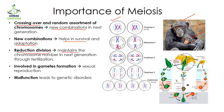Meiosis is a reduction division, and because of this it maintains the chromosome number in the next generation. The chromosome number is restored through fertilization. Here you can see that the anther has n number of chromosomes formed because of meiosis. The ovary contains the egg, which also has n number of chromosomes. When the anther and egg fertilize, 2n chromosomes are restored in the new plant.